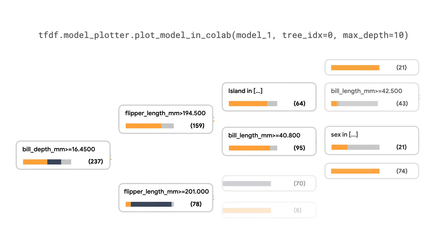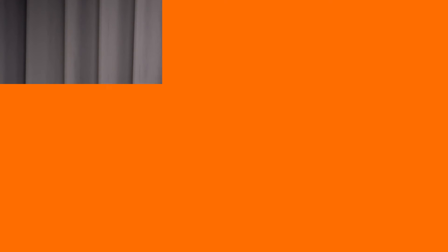Let's plot the first tree of our random forest model to get an idea of what's going on under the hood. The root node on the left contains the first condition — in this case, bill depth. If the bill depth is greater than or equal to 16.55 mm, then the condition is true.